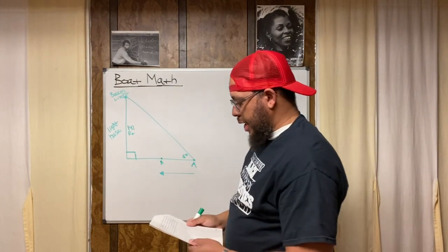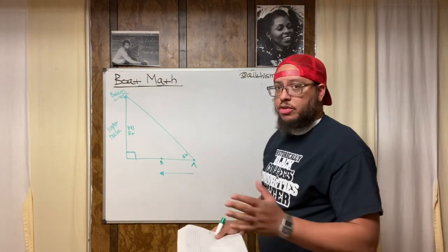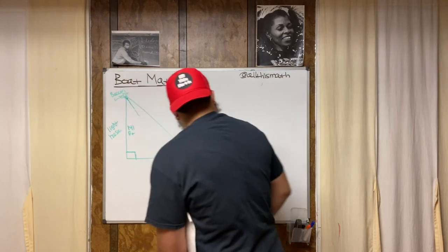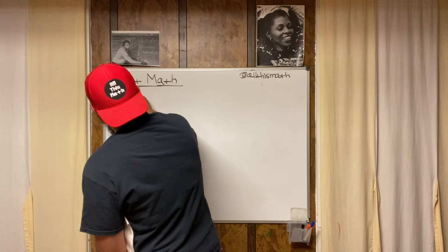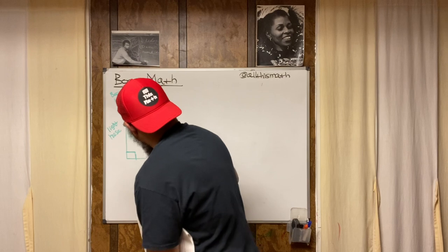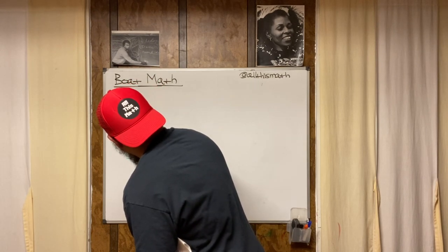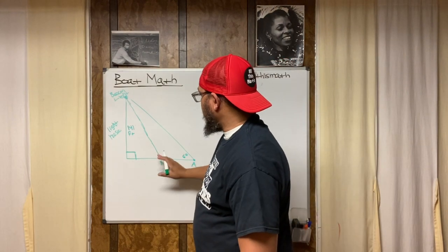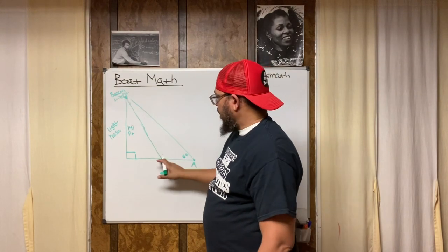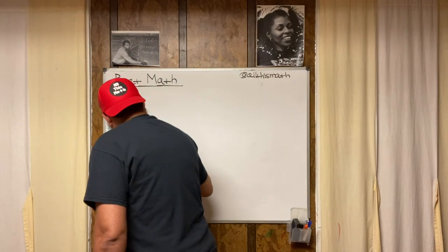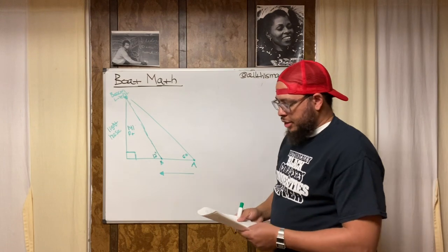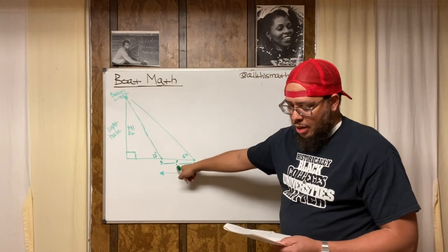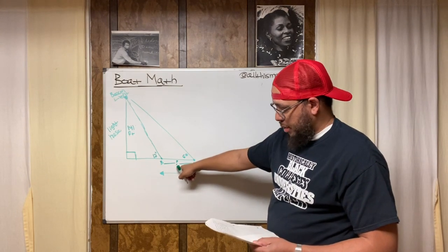From point B, the angle of elevation to the beacon light is 12 degrees. I'll draw a line from point B up to the beacon. This angle here is the angle of elevation — 12 degrees. Now we want to find the distance from point A to point B; that's what we're interested in.